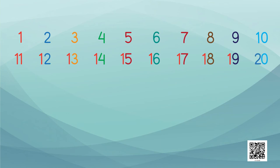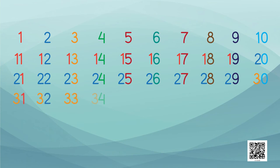1, 2, 3, 4, 5, 6, 7, 8, 9, 10, 11, 12, 13, 14, 15, 16, 17, 18, 19, 20, 21, 22, 23, 24, 25, 26, 27, 28, 29, 30, 31, 32, 33, 34, 35, 36, 37, 38, 39, 40. I won.